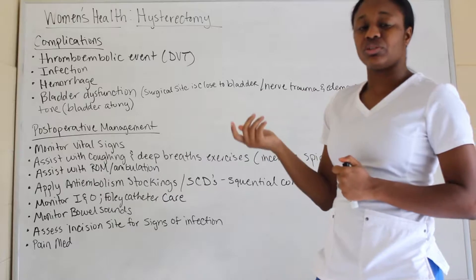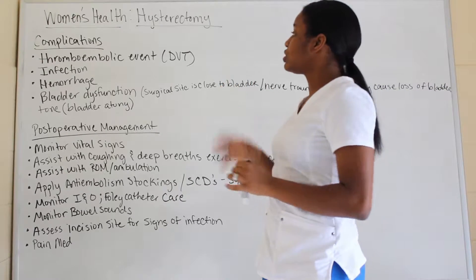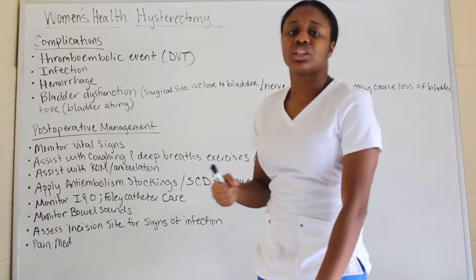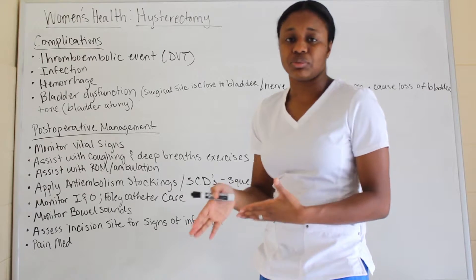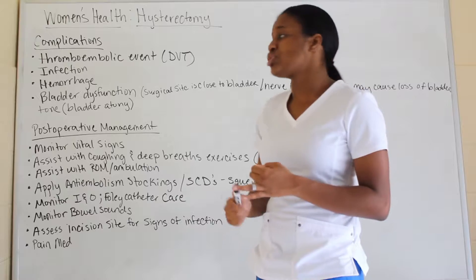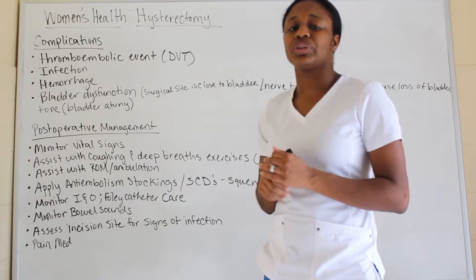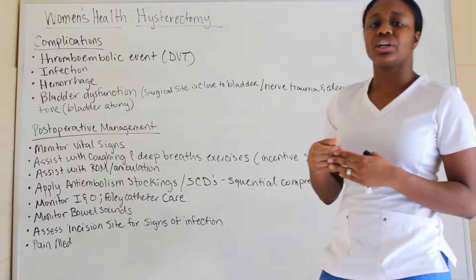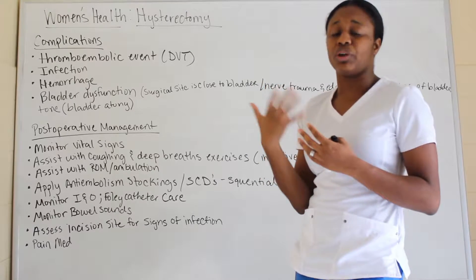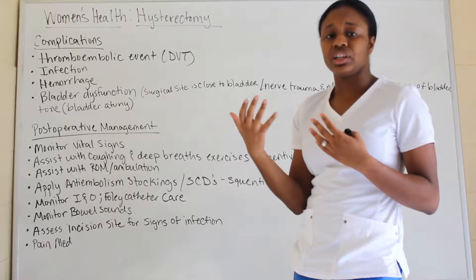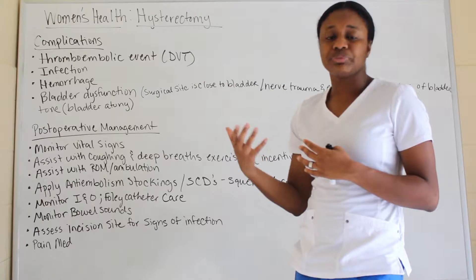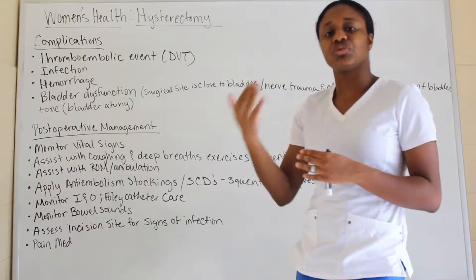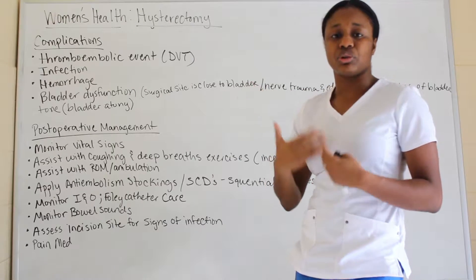Now let's talk about complications. There are four main ones: embolic events such as DVT (deep vein thrombosis), which is a clot in the deep vascular part of the extremity; infections; hemorrhage; and bladder dysfunction. Bladder dysfunction occurs because the surgical site is so close to the bladder, causing edema and nerve trauma, leading to temporary loss of bladder tone — a Foley catheter will be inserted during that time.